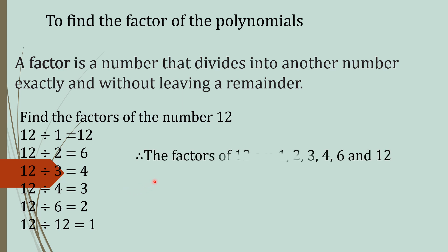So students, the factors of the number 12 are 1, 2, 3, 4, 6, and 12. That means by these numbers we can divide the number 12 and it is exactly divisible — no remainder is left. So these numbers 1, 2, 3, 4, 6 and 12 are called factors of 12.